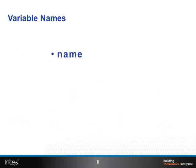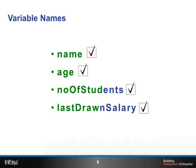Name, age, number of students, and last drawn salary are good examples of variable names. Next, we will see the constants.